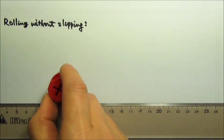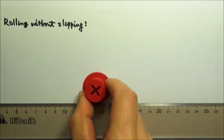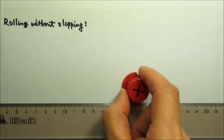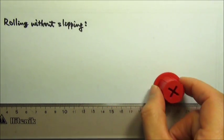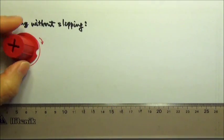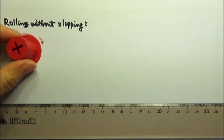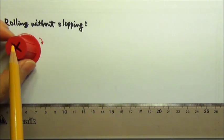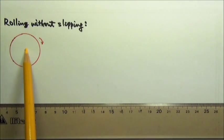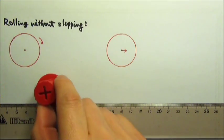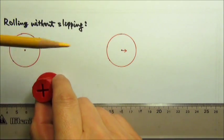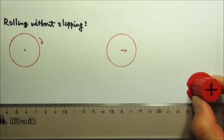When an object rolls without slipping, it does both rotational motion and translational motion. It rotates about an axis that goes through its center, while the center does translational motion.